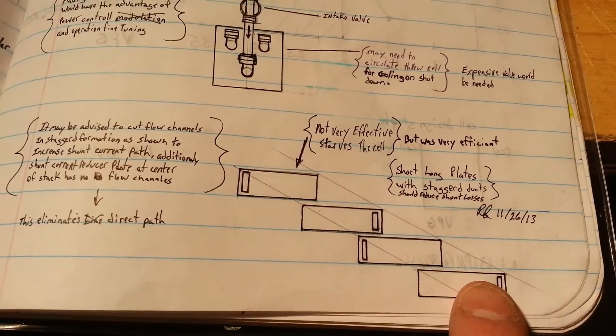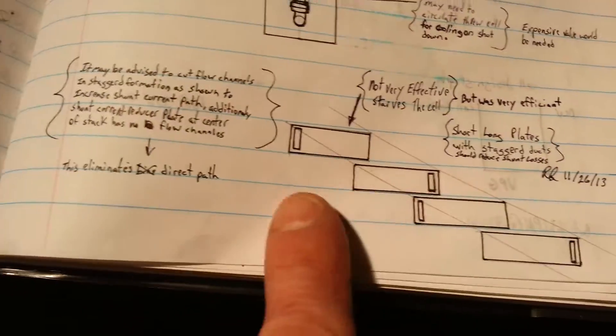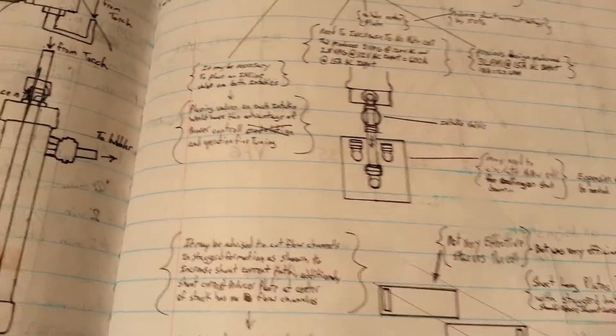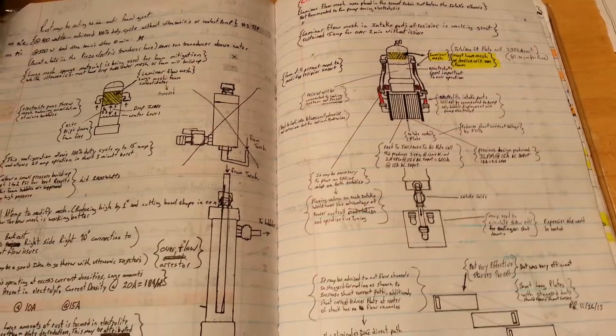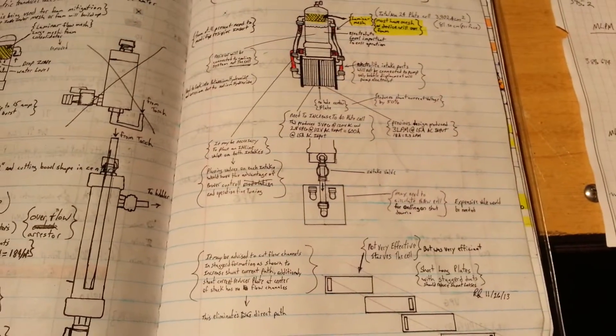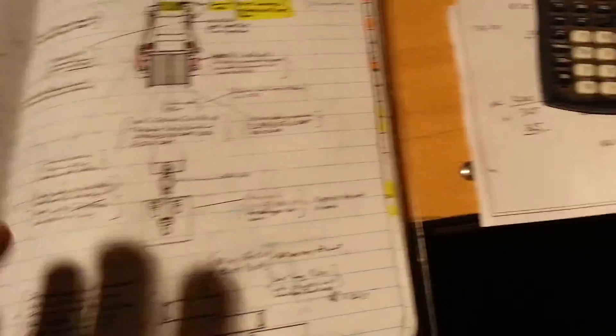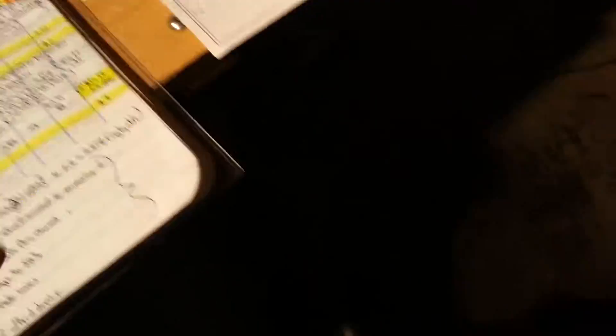What that does is it makes the shunt current have to take a zigzag path through your cell, and what that does is causes more resistance in the path. Therefore, more current will go to electrolysis.